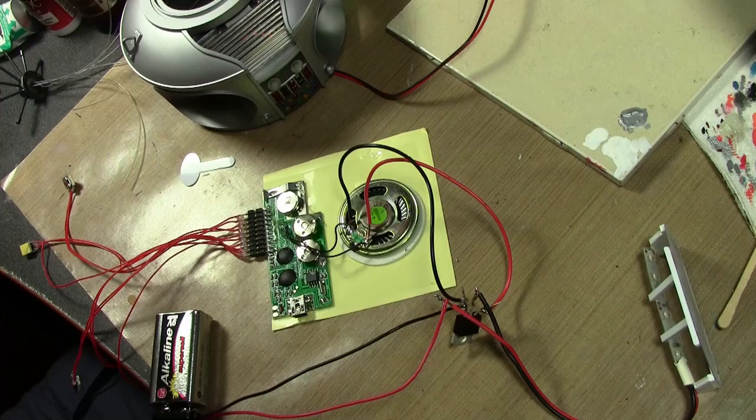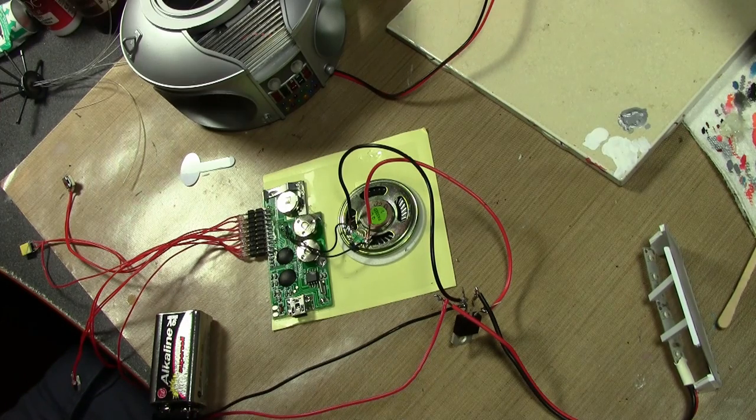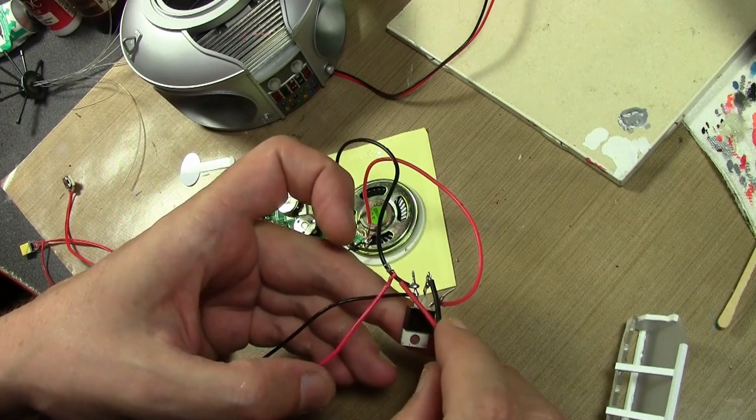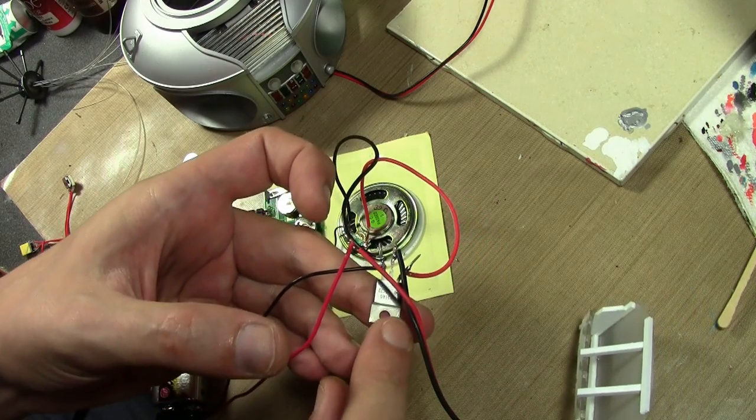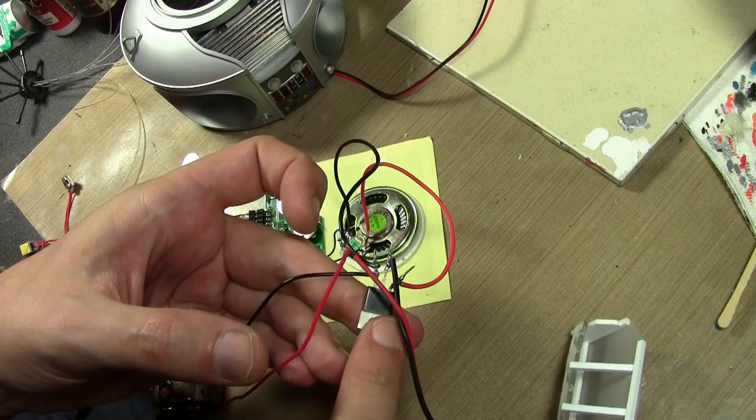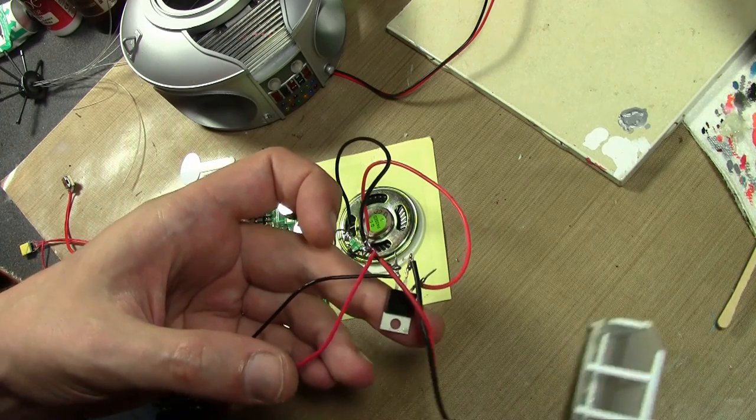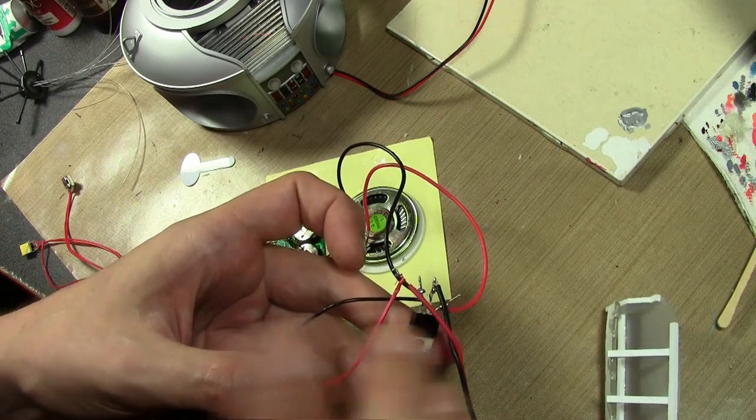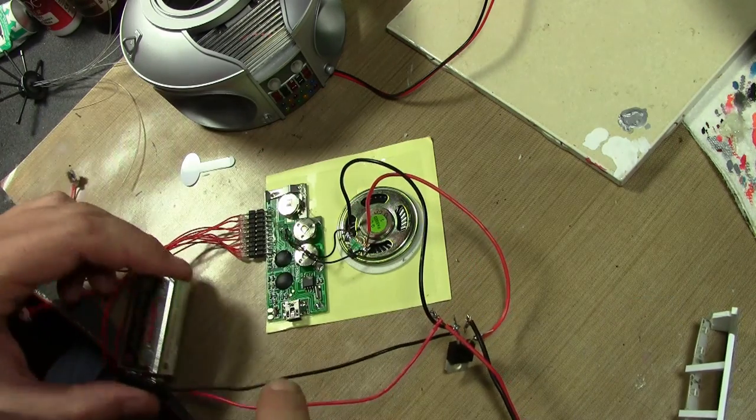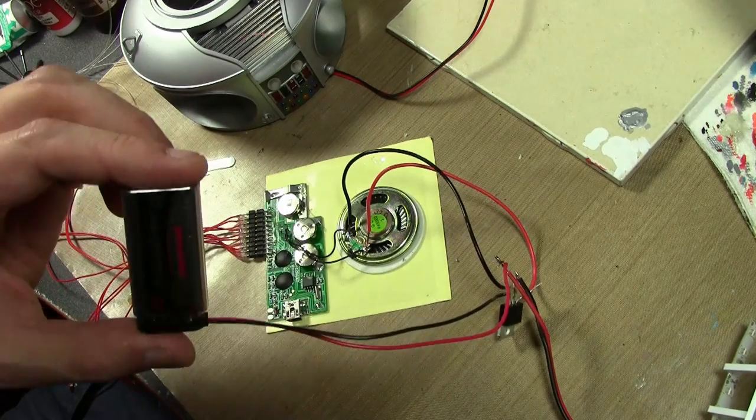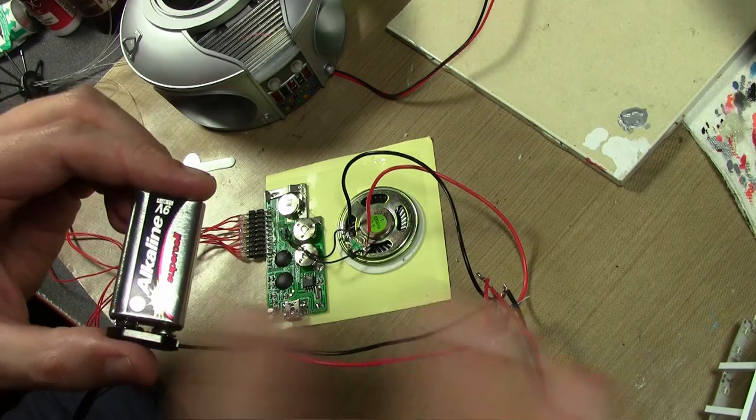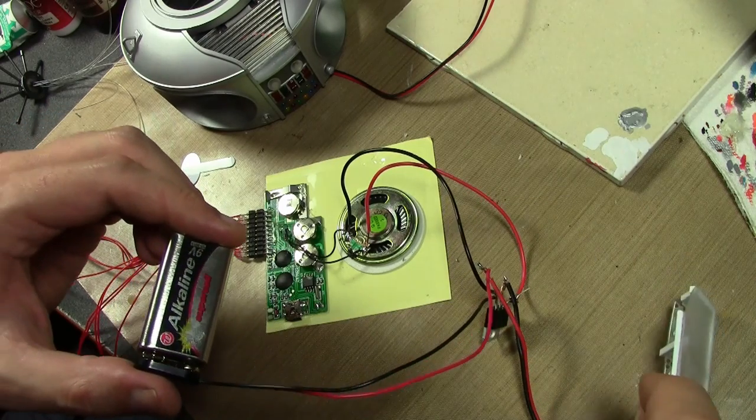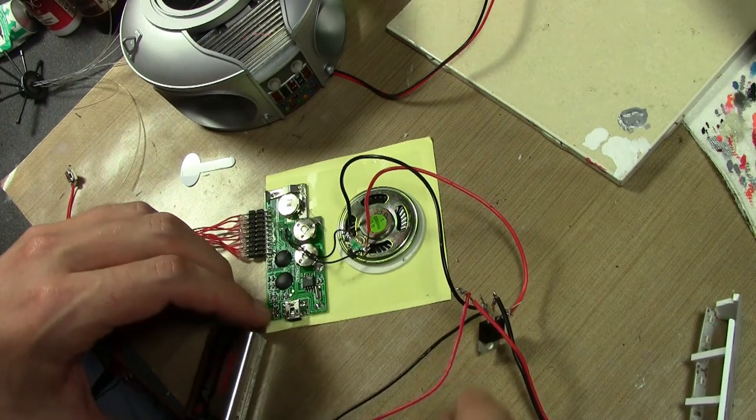So I rummaged around on the internet and I found a solution. I can pick this up without loosening any wires. This little thing right here, this is a TIP31 transistor and I have no idea what magic it does. But what it does, what it allows me to do is to add an additional power supply to this whole rig.